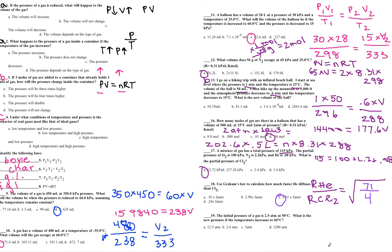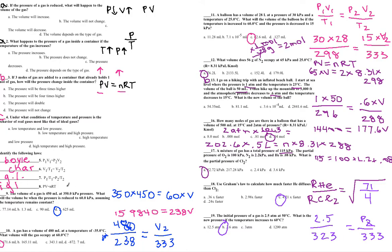The initial pressure of a gas is 2.5 atm at 50°C. What is the new pressure at 60°C? Only pressure and temperature are changing — Gay-Lussac's Law. P1/T1 = P2/T2: 2.5/(50+273) = P2/(60+273), so 2.5/323 = P2/333. Cross-multiplying: P2 = 2.5 × 333 ÷ 323 = 2.6 atm. No pressure conversion needed — only Kelvin conversion required for these gas laws.